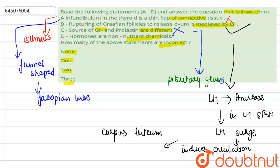So the source is same, not different, so this statement is incorrect. Now hormones are non-nutrient chemicals is the correct statement, as hormones are non-nutrient chemicals which act as intercellular messages and they're produced in trace amounts.